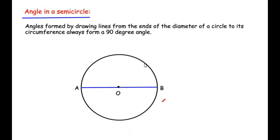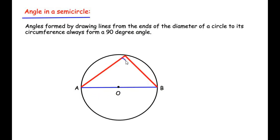You can see that I have drawn a circle and AB acts as a diameter — it passes through the center of the circle. If we make an angle from these two points of the diameter anywhere on the circumference of the circle, it always forms a 90 degree angle. It doesn't matter where you form it — this angle is always going to be 90 degrees. So let us make use of this theorem to solve the example.